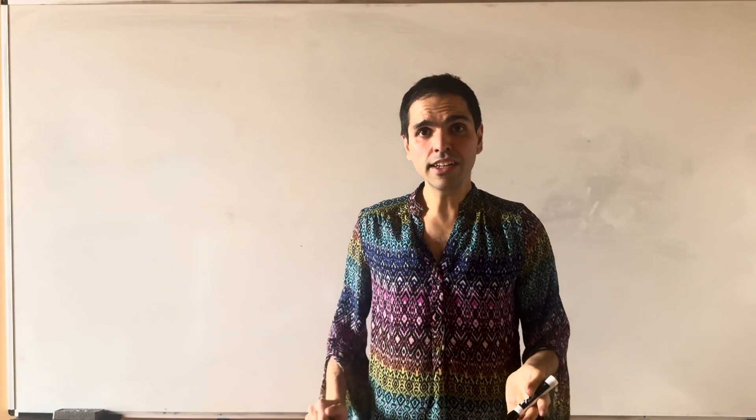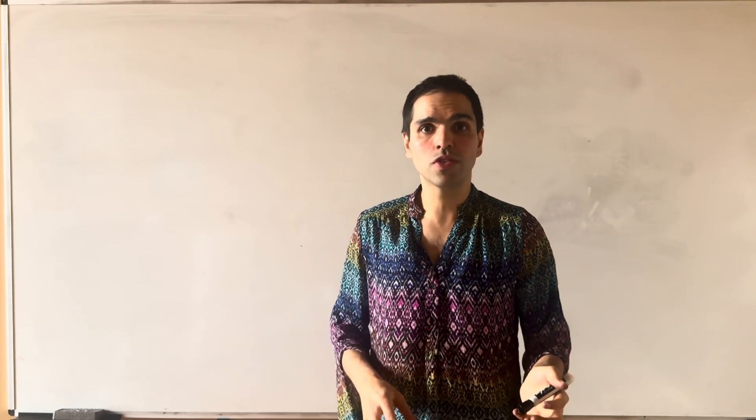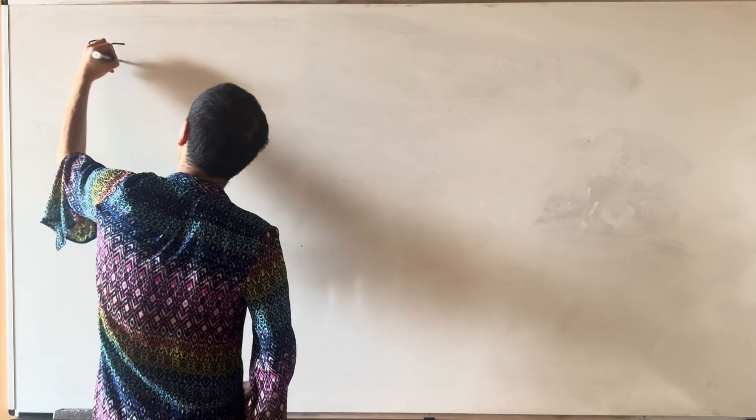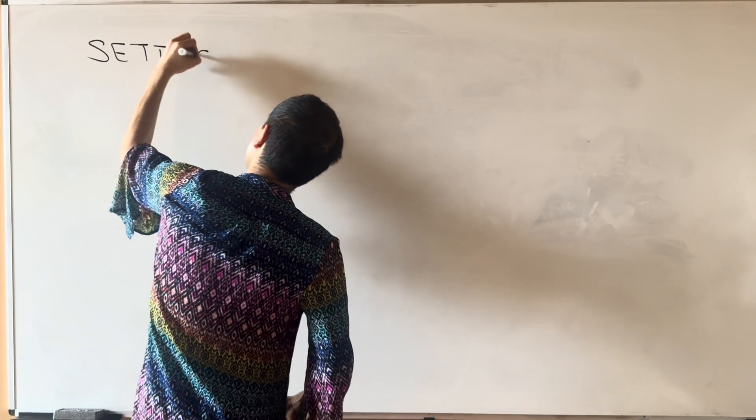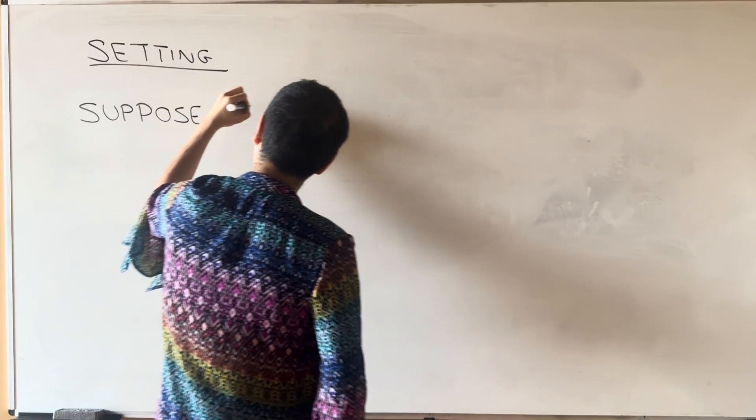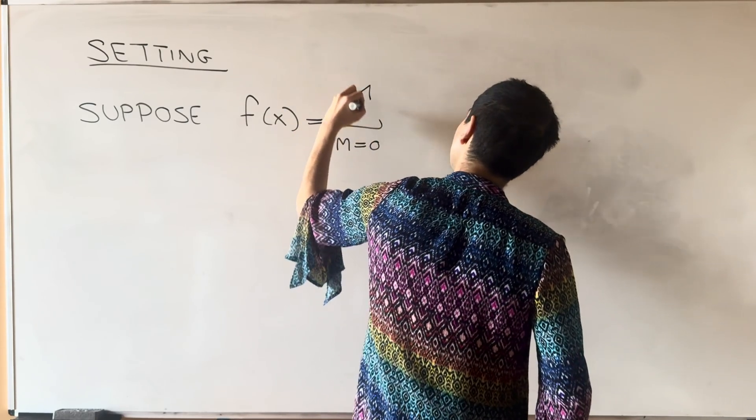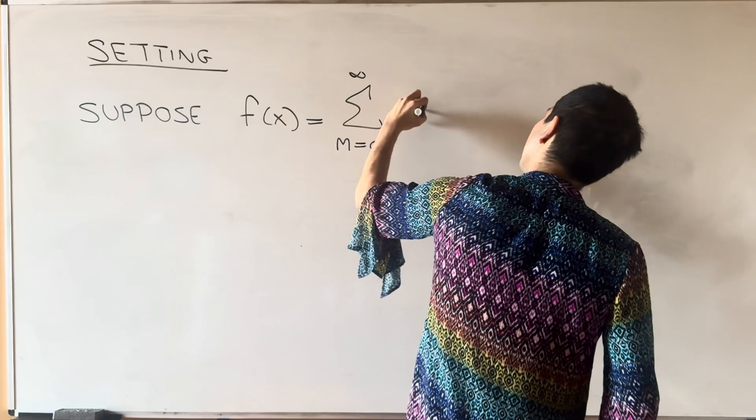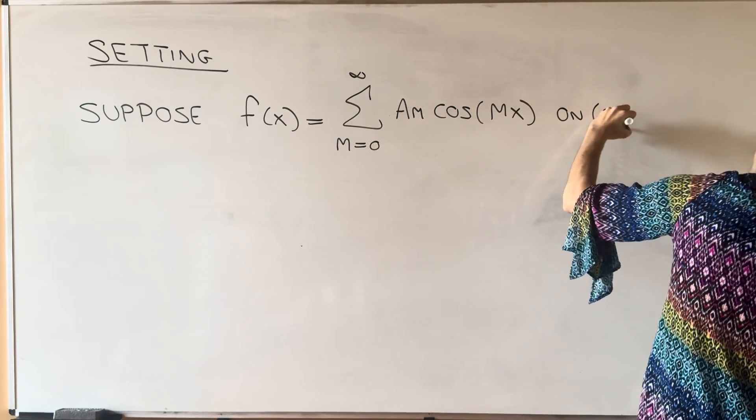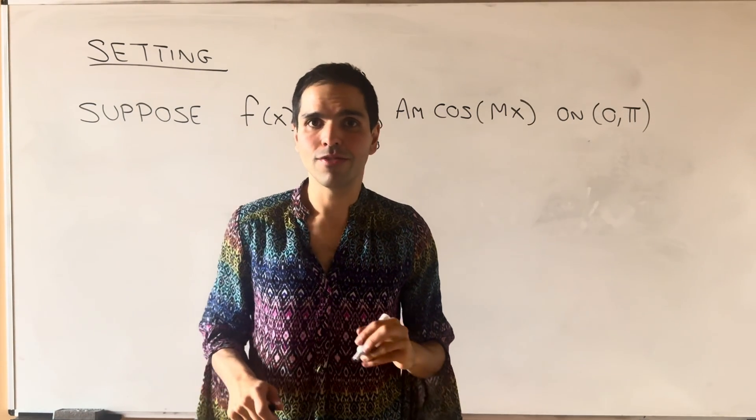And this time what we want to do, we want to derive a Parseval identity, but for the cosine series, just to illustrate how things work for cosine series. So here's the setting. So once again, suppose this time f has a cosine series expansion. So f is the sum from 0 to infinity of a_m cosine of mx, once again, on interval 0, pi. Although, by the way, you can really do it on any interval, the same trick would work.